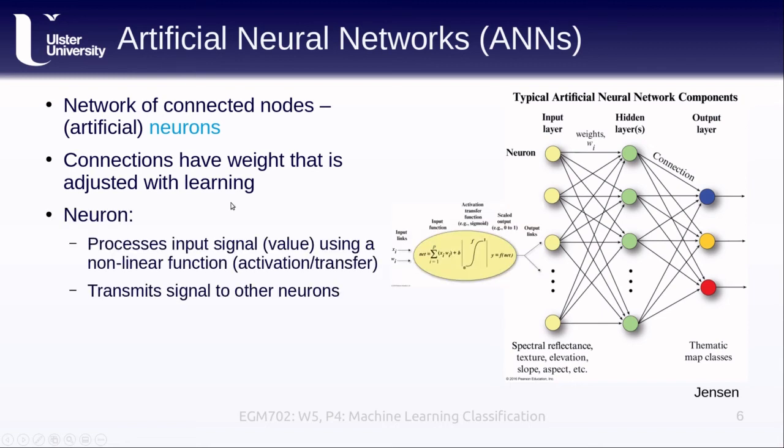The neuron processes a particular input signal, which is really just a value, that then outputs a value to the next node in the network using a nonlinear function, which is known as an activation function or transfer function.